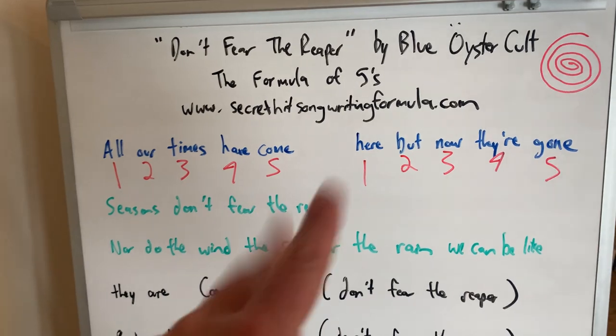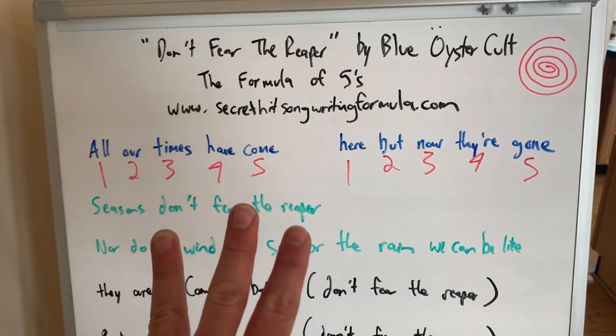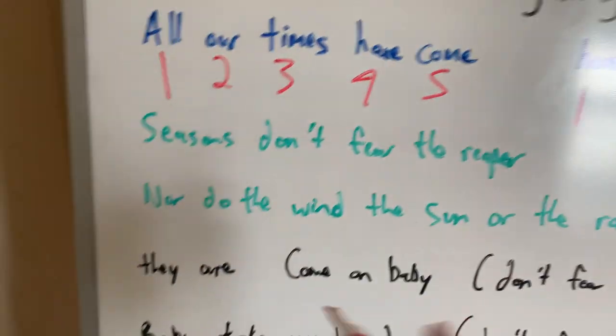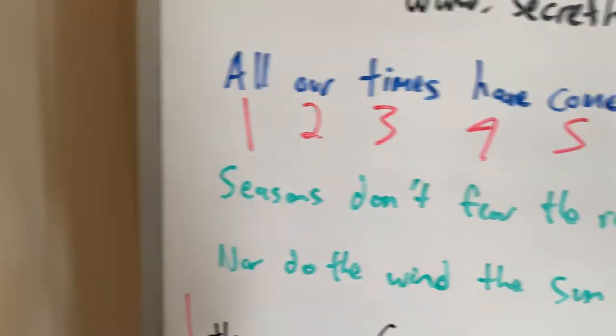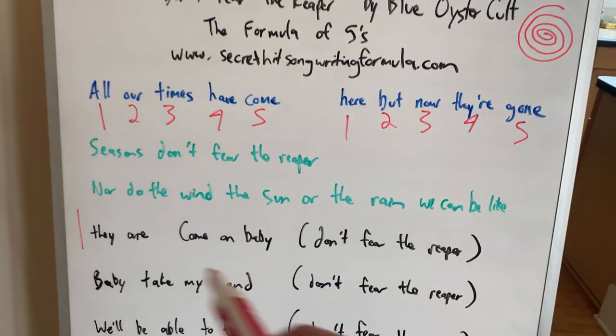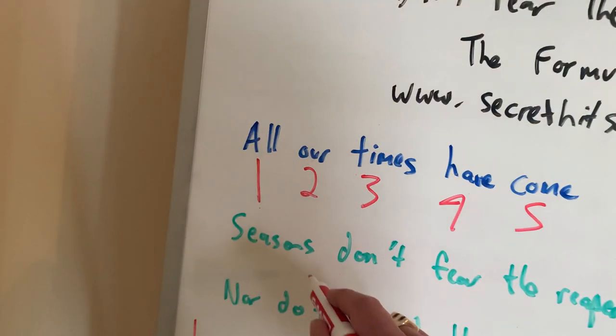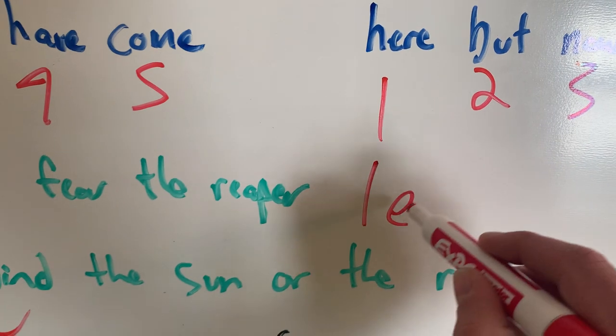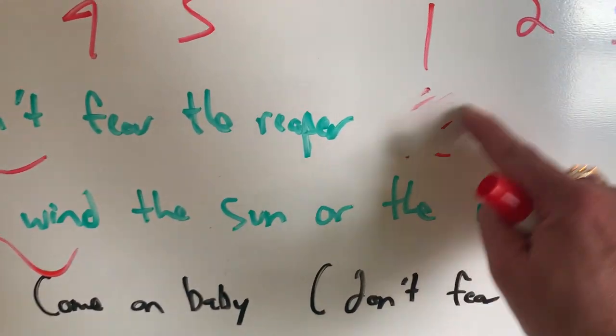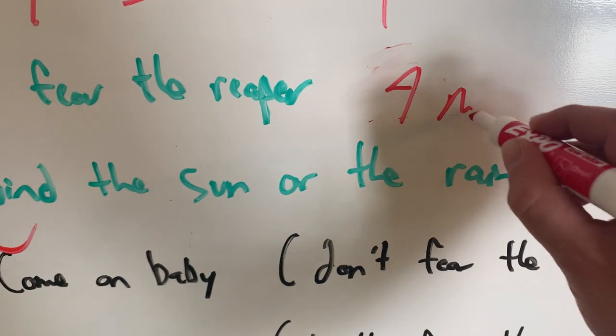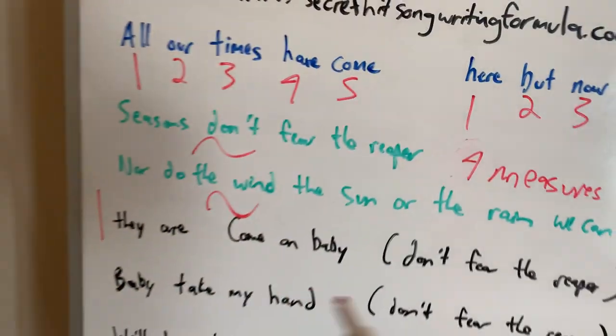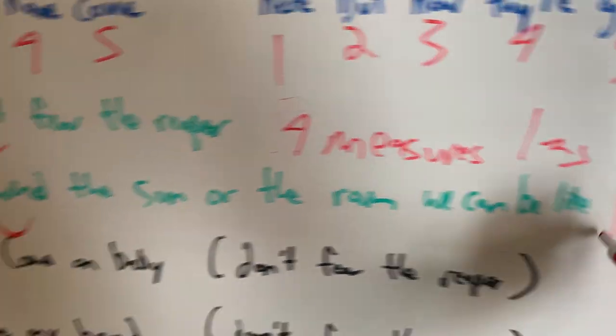Seasons don't fear the reaper, nor do the wind, the sun and the rain, we can be like. So there's the four measures. One, two, three, four, two, two, three, four, three, two, three, four, four, two, three, four. And by the time we get to they are, it's the end of the four measures and we're in the chorus. So, for the first pre-chorus, it's all insignificant because it's less or because it's four measures long. So, we'll write four measures long for the pre-chorus so it's insignificant. This part doesn't have to follow the formula.